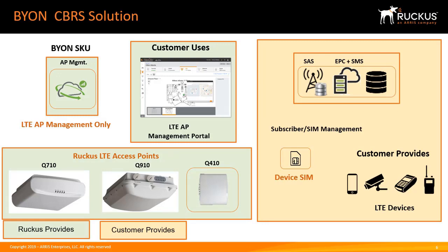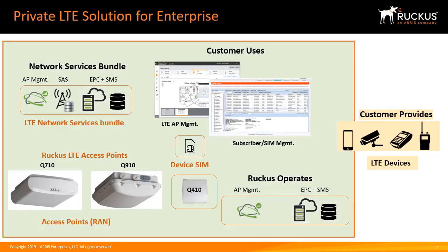License bundles for LTE management are offered in one-, three-, and five-year increments. For one-stop shopping, Ruckus will provide a full private LTE solution with a single SKU called the network services bundle. This includes the LTE AP management portal, spectrum access system, Evolve Packet Core, the appropriate number of SIMs for the customer environment, and the SIM subscriber management system. The initial Ruckus LTE access points are the dual-radio indoor Q710 and dual-radio outdoor Q910; the indoor Q410 is a single-radio LTE AP. The customer will use the AP LTE management portal to install, configure, and manage their LTE AP networks, and use the subscriber management system to configure the SIM cards to identify what devices the SIM has been installed in. The customer can also assign a designated partner or VAR to operate the AP LTE management portal, EPC, and SMS.